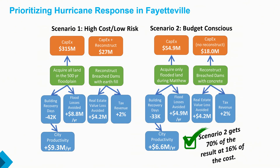In the end, this is what communities are after — scenario-based results. We need to be able to model proposed actions to the community. In Fayetteville, their big problem was storm damage in the 500-year floodplain and many breached dams — 30 dams were breached in that one county because of Hurricane Matthew. Scenario one: buy out all the properties in the 500-year floodplain and reconstruct the breached dams. That would cost $340 million — a number they'd never really be able to get — but it would result in $8.8 million per year of reduced storm damage and $9.3 million increase in city productivity over a 30-year timeframe.